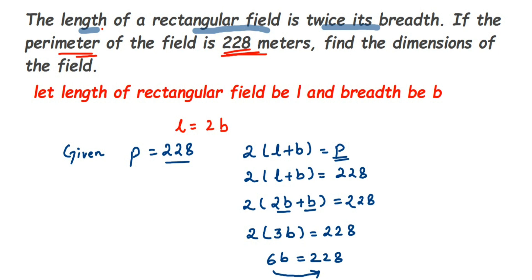I'm going to transpose 6 to the other side. 6 is in multiplication, when transposed goes to division. So B is equal to 228 divided by 6. We're going to cancel directly.